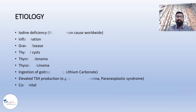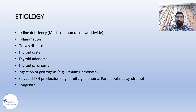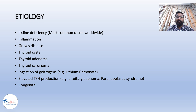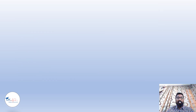Speaking about the etiology — the most common causes of goiter: first is iodine deficiency, which is the most common cause worldwide. Any inflammation can also cause goiter, for example Hashimoto's thyroiditis and Graves disease. Other causes include thyroid cyst, thyroid adenoma, thyroid carcinoma, and ingestion of goitrogens — natural or chemical substances which interfere with thyroid gland function. An example is lithium carbonate. Additionally, elevated TSH production in pituitary adenoma, paraneoplastic syndrome, or congenital goiter are also causes.